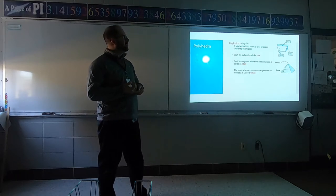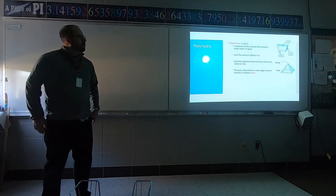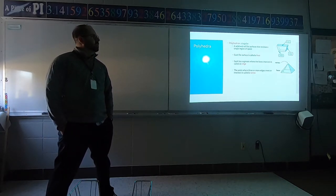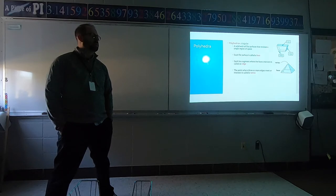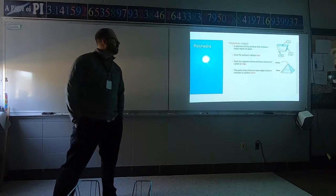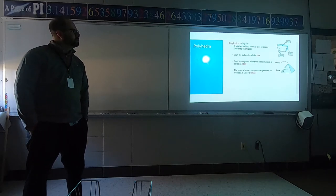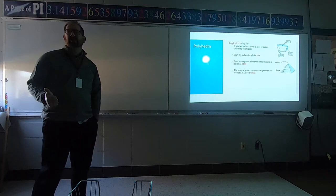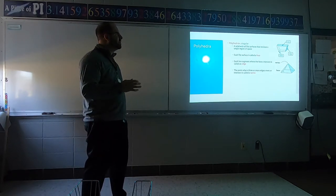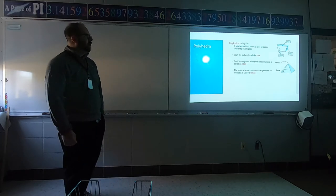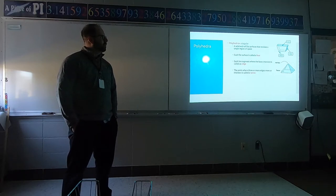A vertex is where edges meet, and a base is just like a face — it's simply what the shape sits on at the bottom. So to recap: faces are flat polygon surfaces; edges are where the line segments — where the faces come together — intersect to make a straight line; and the corners where those edges meet are called vertices. Those are the specific terms for polyhedra.